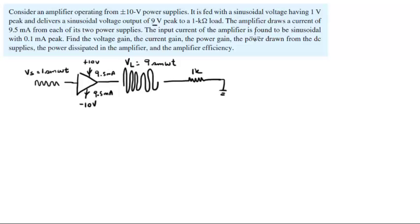The input current of the amplifier is found to be sinusoidal with a peak of 0.1 milliamps.